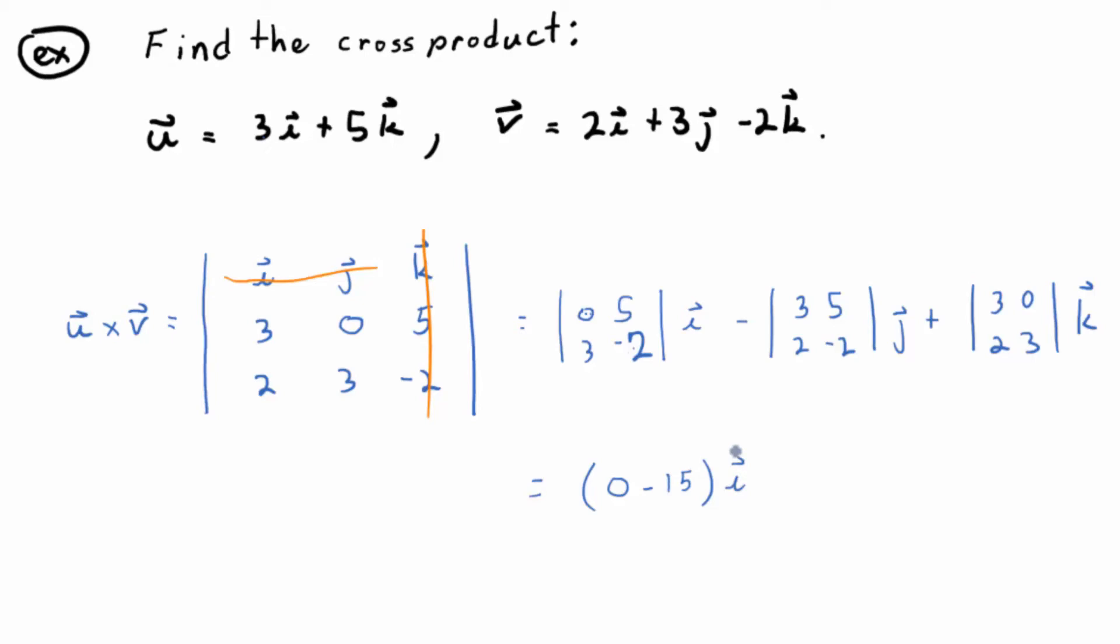Does everybody see where that comes from? And then minus, help me out here. 3 times negative 2, negative 6, minus 10. Times j, we'll fix that in a second. And then plus what? 9 minus 0, or just 9k.